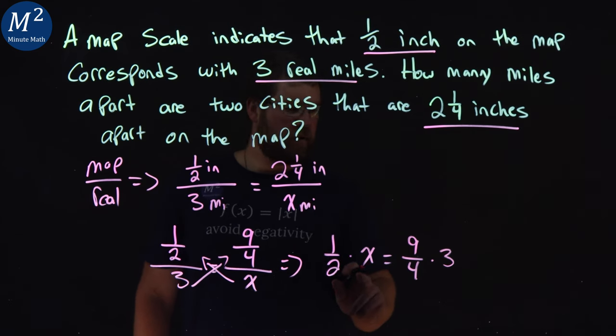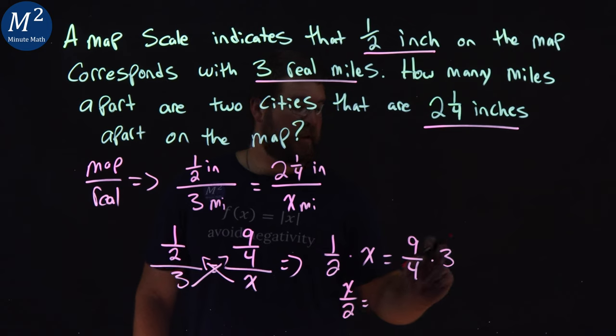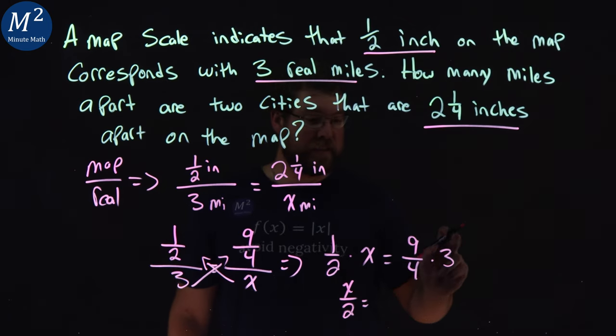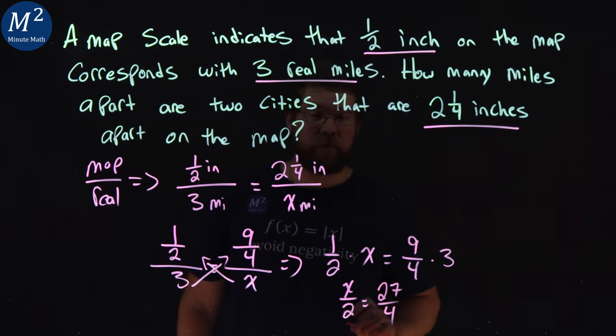All right. So now we have x over two essentially equals nine times three which is twenty-seven over four.